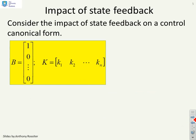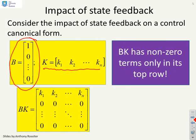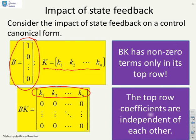Looking at state feedback in control canonical form: in CCF, the B matrix has a one at the top and zeros elsewhere. With state feedback parameters K1 to Kn, the product BK has non-zero values only on the top row and zeros everywhere else. Crucially, the top-row coefficients are independent of each other — K1, K2, through to Kn can each be chosen separately and independently.